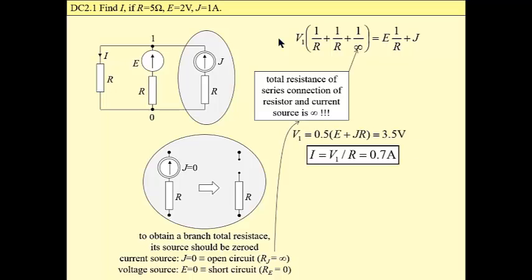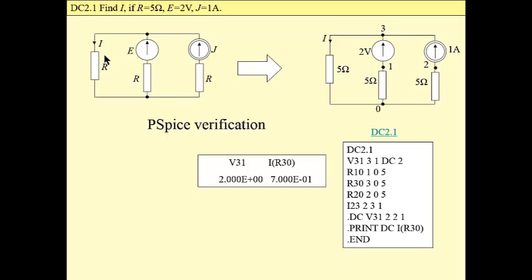And then dividing this voltage by resistance, we obtain current I, which is 0.7A. We may verify this solution by means of PSpice simulation. This is the netlist and part of the output file is here. The current is really 0.7A.